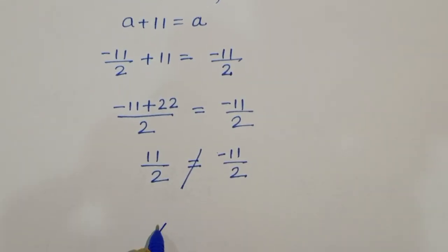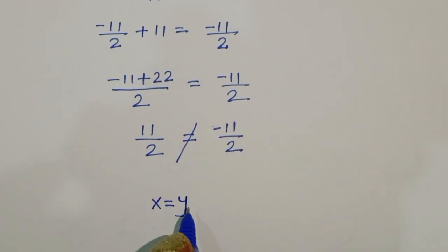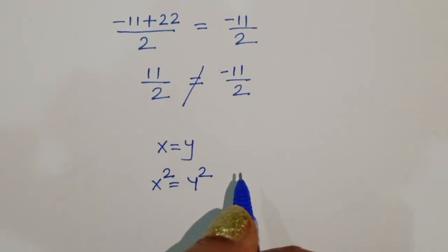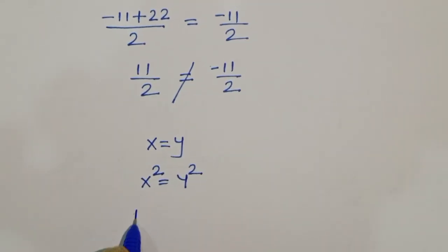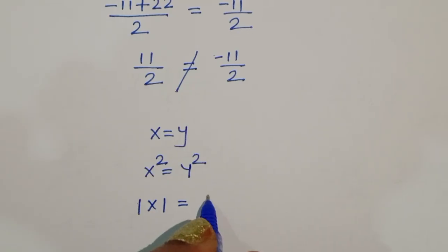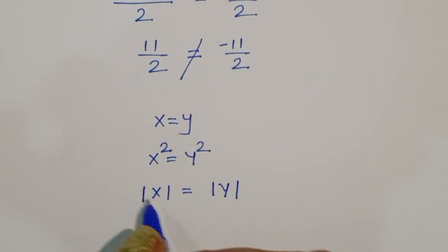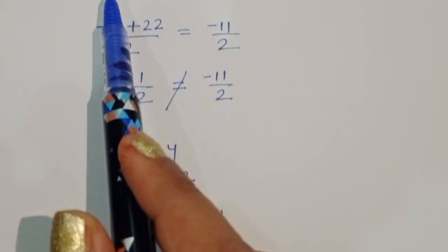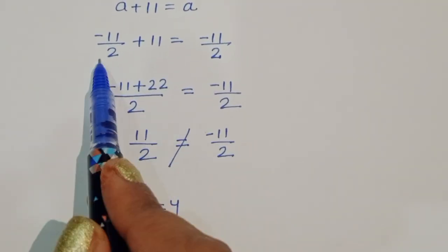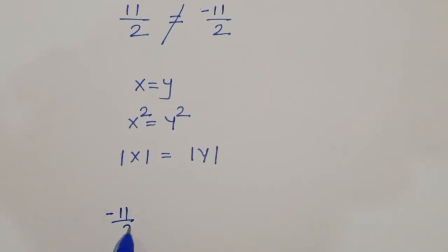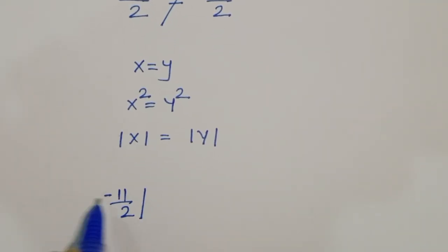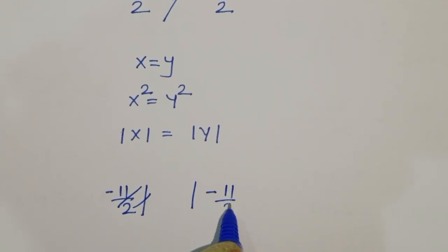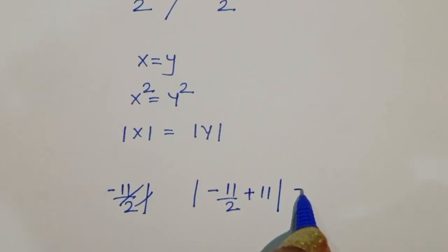We know that if x = y, then x² = y², and also the absolute value of x equals the absolute value of y. Using this absolute value property, we can apply it here: the absolute value of (-11/2 + 11) equals the absolute value of -11/2.